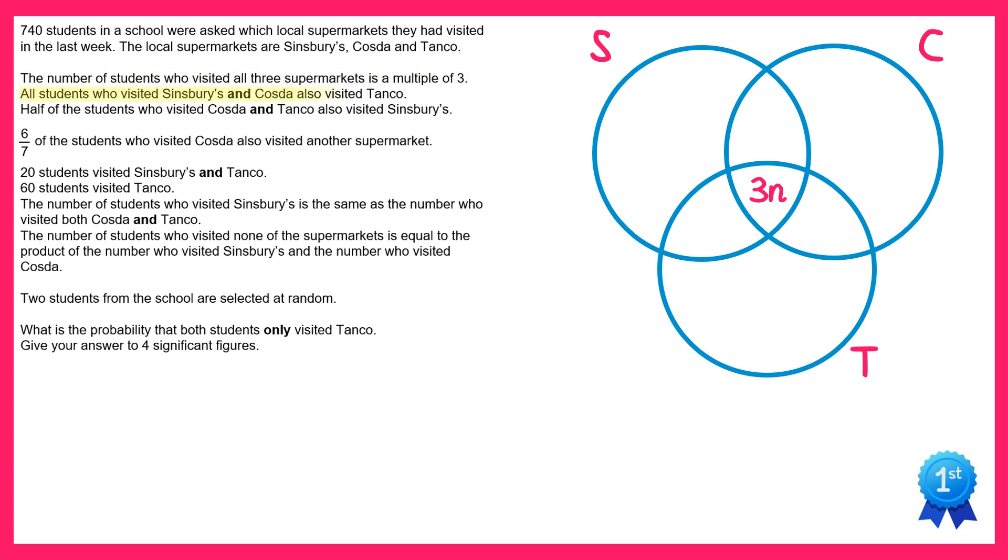Now let's look at this next bit. All students who visited Sinsbury's and Cozda also visited Tanko. That means there are no students who visited Sinsbury's and Cozda only. So in that part of the diagram we can place a zero.